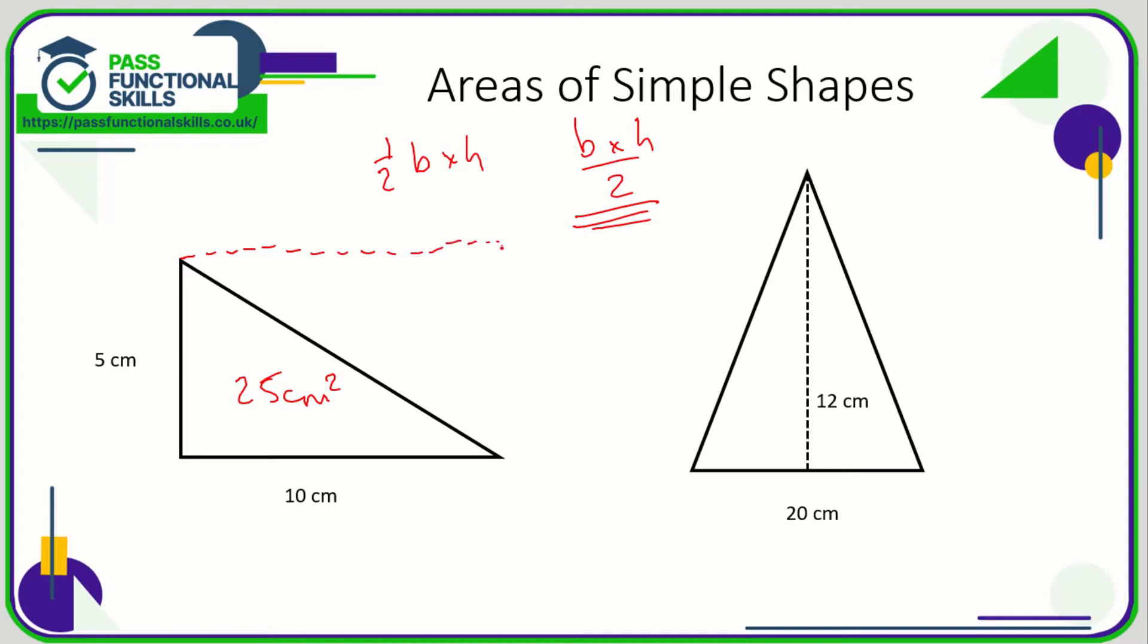Alternatively, when you've got an even number, you could instead of doing 5 times 10 equals 50, 50 divided by 2 is 25, you can just half the 10. Half of 10 is 5, 5 times 5 is 25.